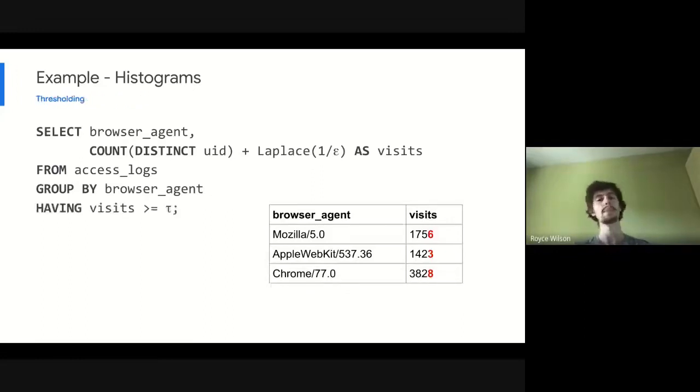The next thing that we do is we do this noisy threshold using this tau parameter. Tau we derive from our privacy parameters, epsilon and delta, and we only keep output rows that pass this threshold that we compute. So we truncate every row with sparse contribution from individual users. This is where we get this delta component of our epsilon delta differentially private model. And things are looking a lot better here, but we're still not completely satisfying the definition.